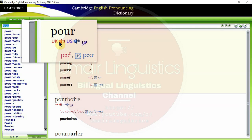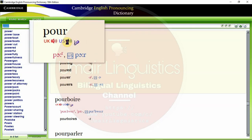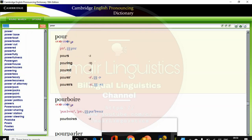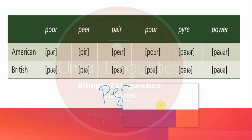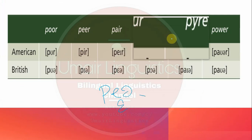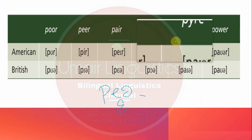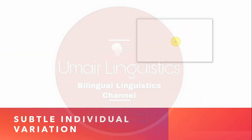Even then, there is a difference which at first we might not hear clearly because we might not yet have well-developed phonetic listening skills. But as we are here to discuss subtle individual variation — as we have discussed this subtle individual variation — the vowel might vary from one variety to another.